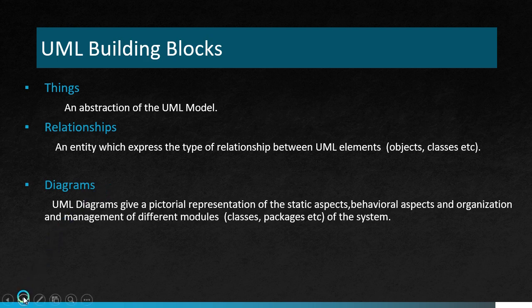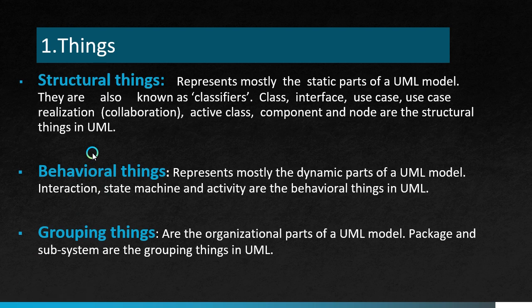Things can be classified into four types. The first is structural things, which represent mostly the static parts of the UML model. They are also known as classifiers. Examples include class, interface, use case, use case realization, active class, component, and node. The second type is behavioral things, which represent mostly the dynamic parts of the UML model. Examples are interaction, state machine, and activity.